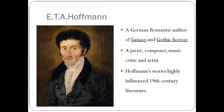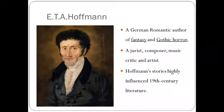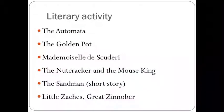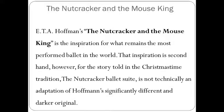Hoffman was a jurist, composer, music critic, and artist. His stories highly influenced 19th-century literature and he is one of the major authors of the Romantic movement. His literary works include 'The Automata,' 'The Golden Pot,' 'Mademoiselle de Scudéry,' 'The Nutcracker and the Mouse King,' 'The Sandman,' and 'Little Zaches.' Today we will focus especially on 'The Nutcracker and the Mouse King.'